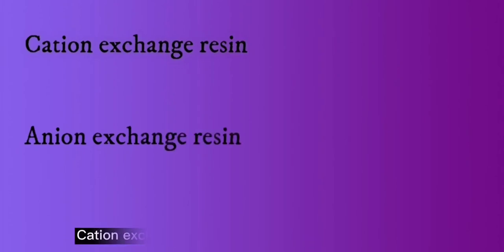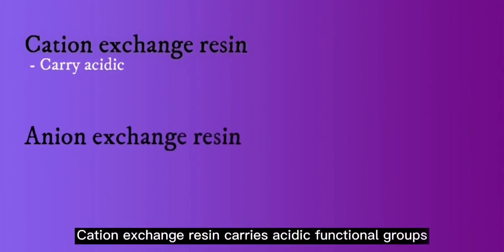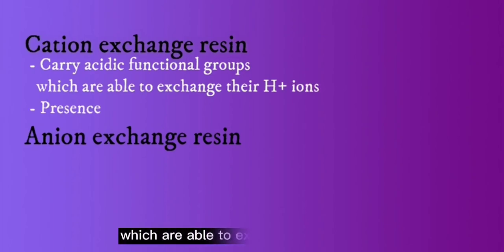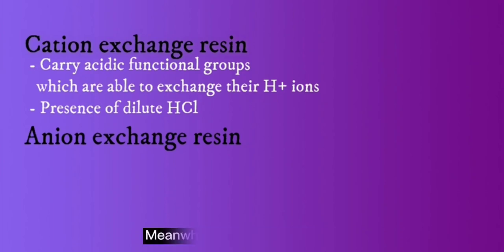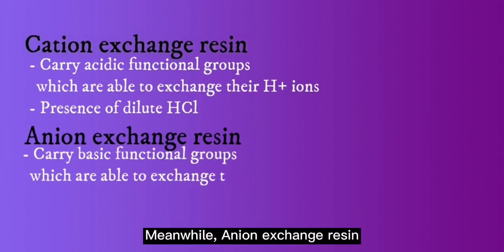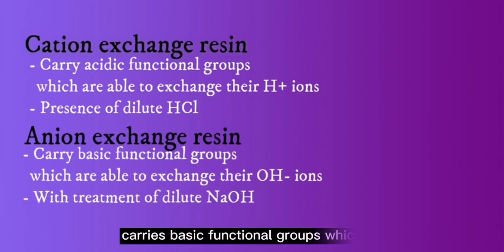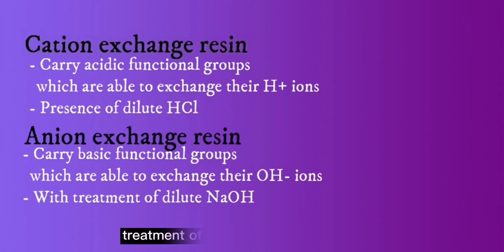Cation exchange resin carries acidic functional groups which are capable of exchanging H-plus ions with the treatment of dilute HCl. Meanwhile, anion exchange resin carries basic functional groups which on treatment with dilute NaOH are capable of exchanging their OH-minus ions.